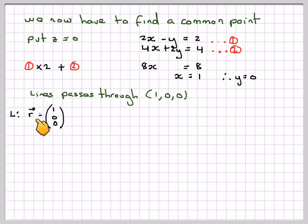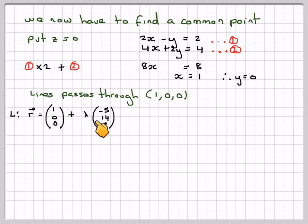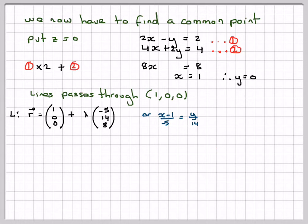So the vector equation of the line is r equals (1, 0, 0) plus lambda(-5, 14, 8), where (1, 0, 0) is the point and (-5, 14, 8) is the directional vector of the line. In Cartesian form: (x minus 1) over minus 5 equals y over 14 equals z over 8.